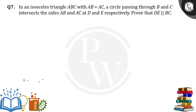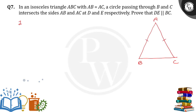So first of all, there is a triangle ABC. Here is A, B, C — triangle ABC with AB equal to AC. So I am writing: in triangle ABC, AB equals AC.